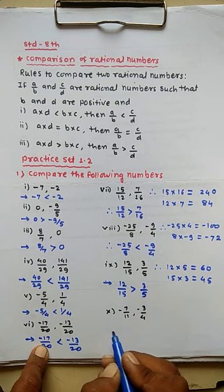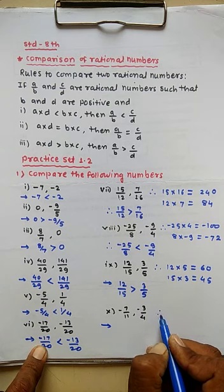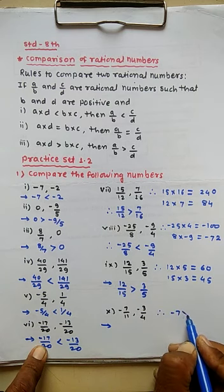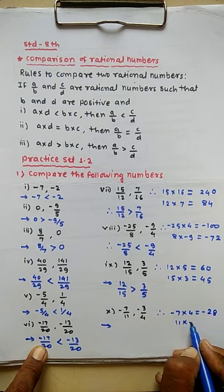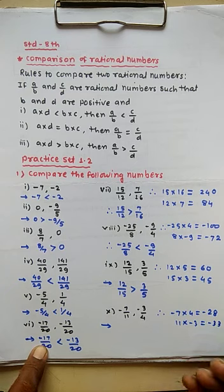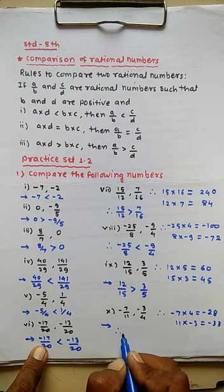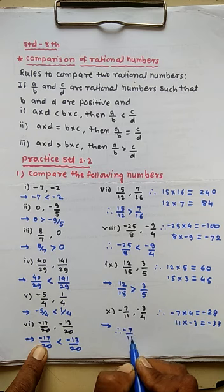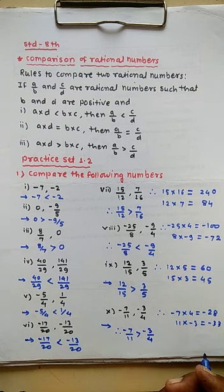Example 10, the last example: cross-multiply. Minus 7 multiplied by 4 equals minus 28. Second multiply: 11 multiplied by minus 3 equals minus 33. Both results have negative signs. When both are negative, the smaller absolute value is the larger number, so the first number is greater. Therefore minus 7 divided by 11 is greater than minus 3 divided by 4. That completes Practice Set 1.2.